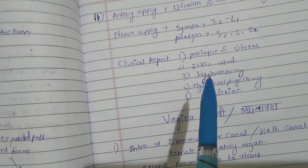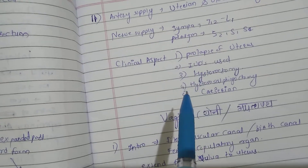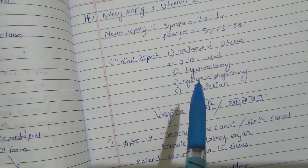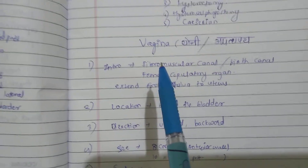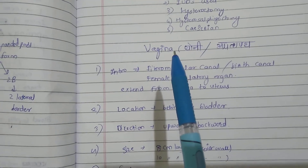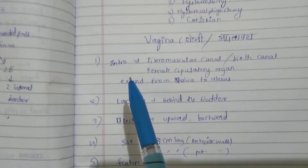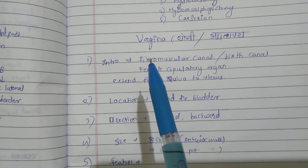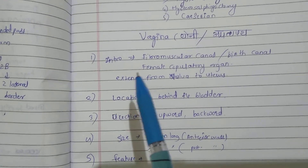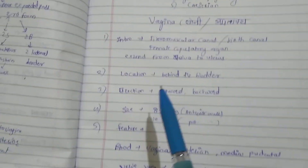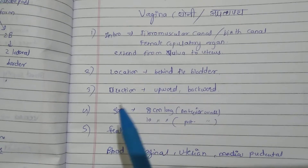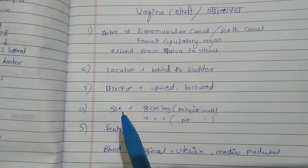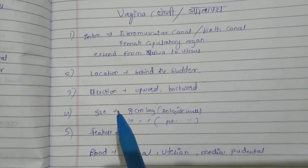Clinical aspects of the uterus: prolapse of the uterus, IUD is used, hysterotomy, hysterosalpingotomy, and caesarean section. The vagina is the fourth part of the internal genitalia, known as yoni or apatyapath. It is a fibromuscular canal or birth canal, the female copulatory organ. It extends from the vulva to the uterus, located behind the bladder, with a direction upward and backward. Size: 8 cm anterior wall and 10 cm posterior wall.